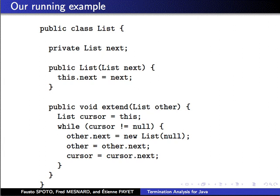Consider this example. We have a list with the next pointer. You build a list by providing the next list. You can also extend the list, which means that you add as many new elements as there are in another list. You can see the termination of Extend depends on the termination of the loop that you have inside Extend.